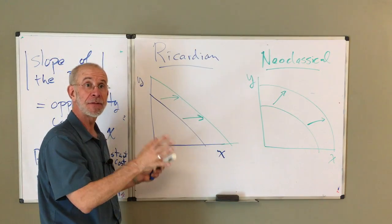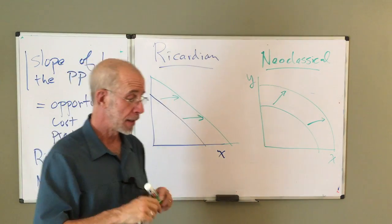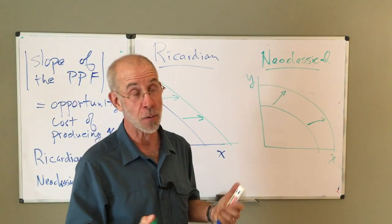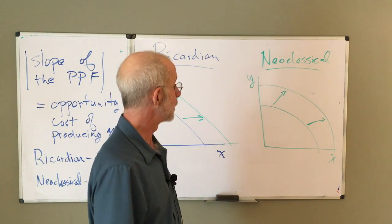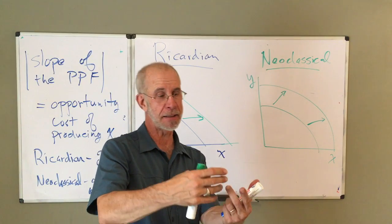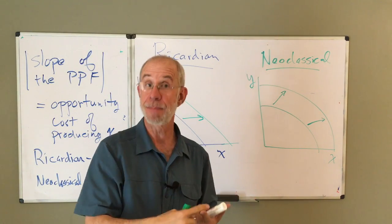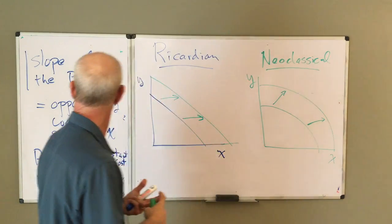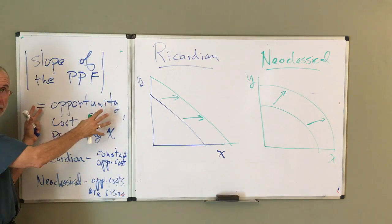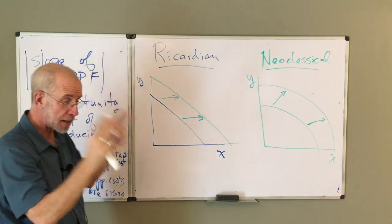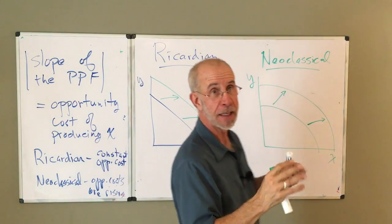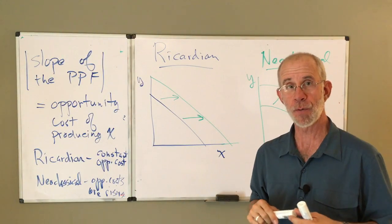Anyway, it's an introduction to PPFs. You'll use that a lot in many different contexts, especially in a trade course, but in other situations as well. Again, it's telling you about the possibilities of production. And importantly, keep this in mind. The slope of the PPF gives you the opportunity cost. That will be a very helpful thing to remember as you go forward.